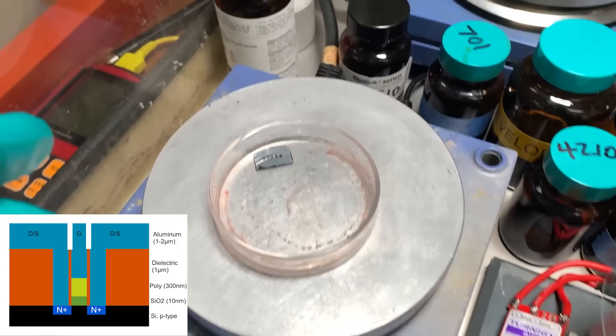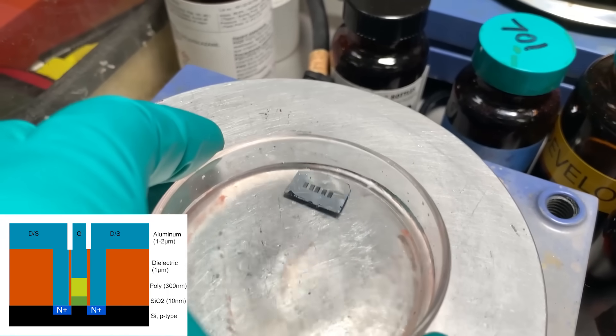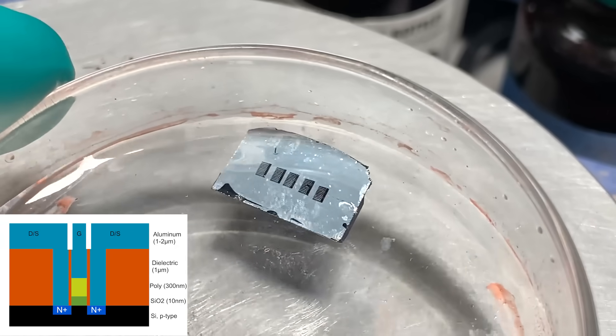Once that's done, stick the wafer into a warm phosphoric acid bath that etches off the residual aluminum, and finally the chip is done.